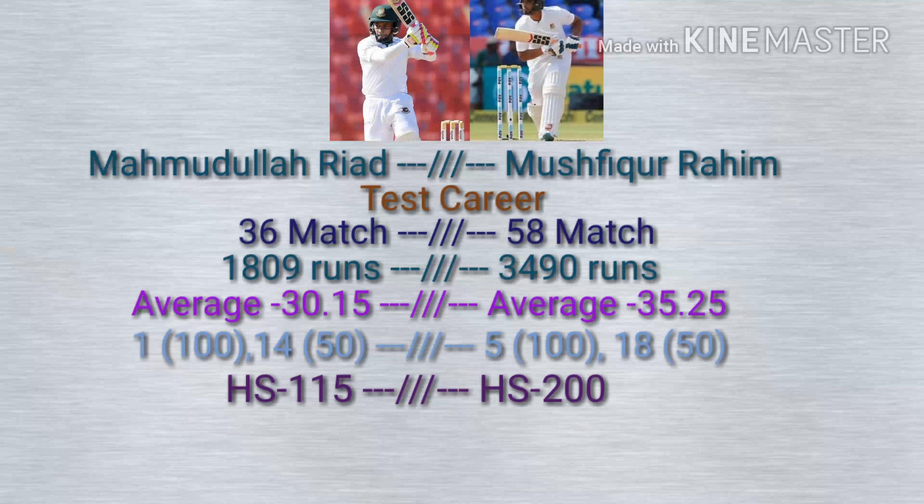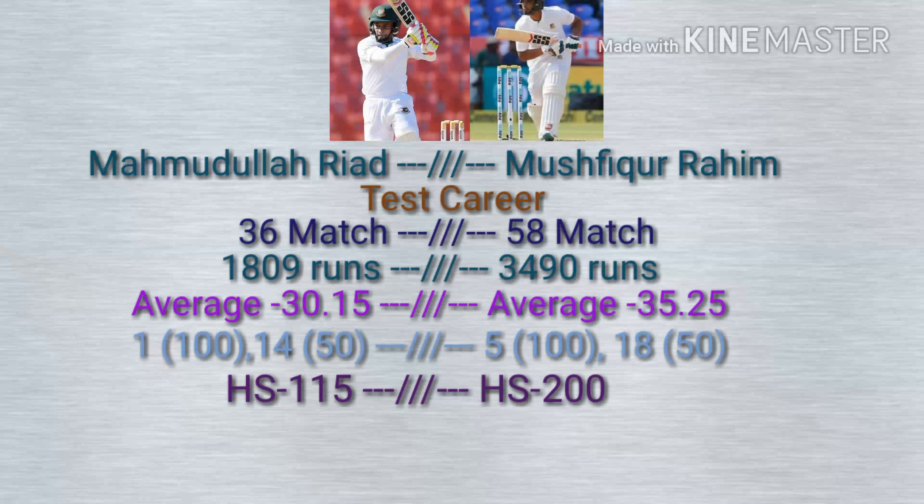The high score of Mahmoudullah Riyadh is 115 and Mushfiqur Rahim is 200. Moving on to the ODI career — Mushfiqur Rahim played 177 matches and Mahmoudullah Riyadh played 141 matches.